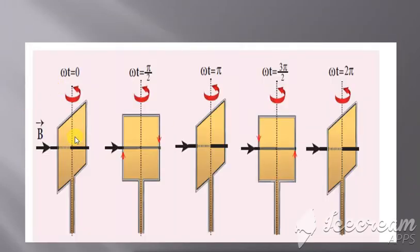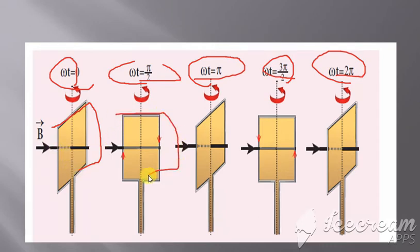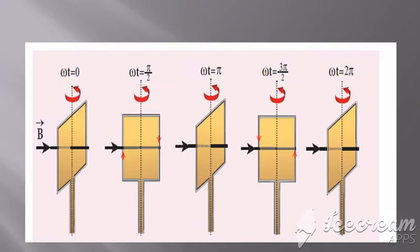This is represented with the help of a diagram. The coil is rotated in the anti-clockwise direction. We consider omega t values of 0, pi/2, pi, 3pi/2, and 2pi. As the coil rotates, it goes from a slanting position to straight, then slanting again, back to straight, and slanting — completing the cycle.